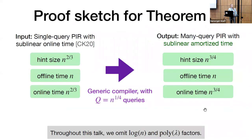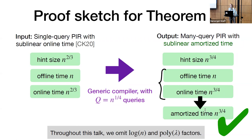The cost of this construction is dominated by running the underlying PIR scheme λQ times, each on a database of size n/Q. We pick Q = n^{1/4}, and look at the performance of the input PIR scheme running λQ times on a database of size n/Q. This gives us a PIR scheme with hint size n^{3/4}, offline time n, and online time n^{3/4}. Our output PIR scheme supports n^{1/4} adaptive queries, so the amortized per-query server time is n^{3/4}. We now indeed have a PIR scheme with sublinear client storage and sublinear server time.